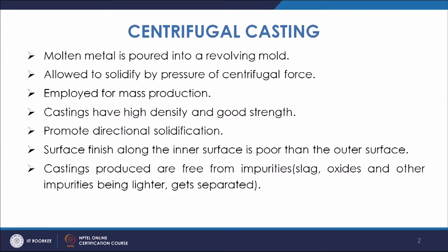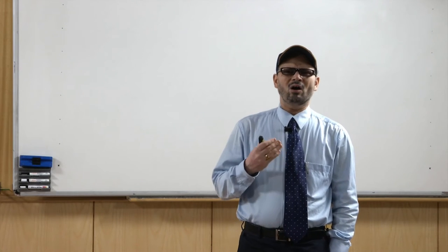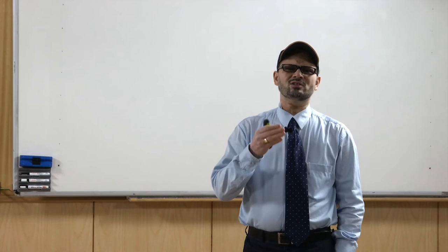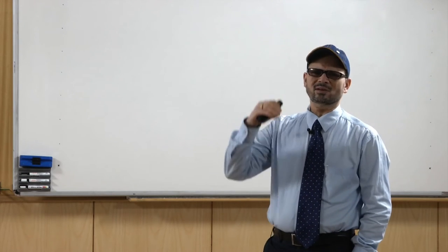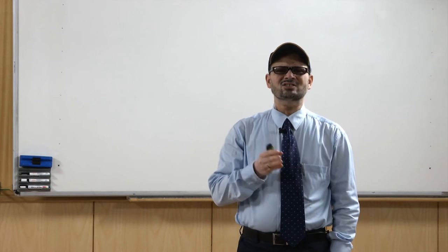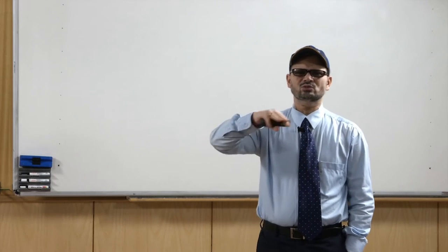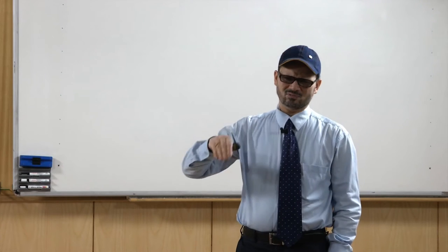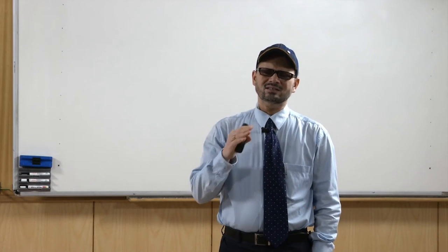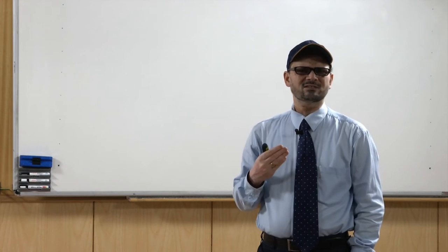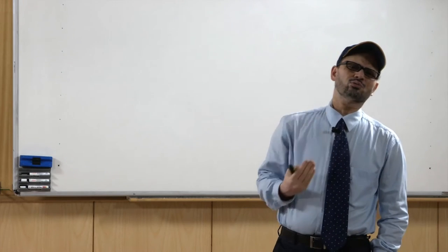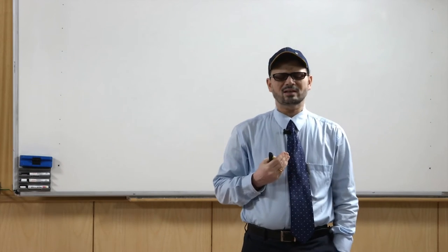Centrifugal casting uses centrifugal forces generated by the rotation of the mould. It is normally used to make symmetric types of pipes or smaller-size castings where you need to make a large number of castings in one go. Liquid metal is poured into a common runner attached to different castings through gates, and then this runner is rotated so the liquid metal goes into the cavity towards the extremities, ensuring the cavity is filled.